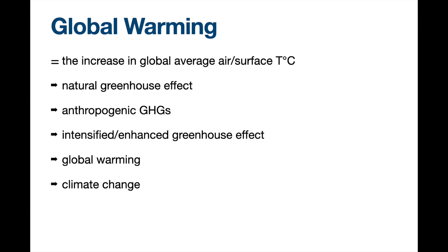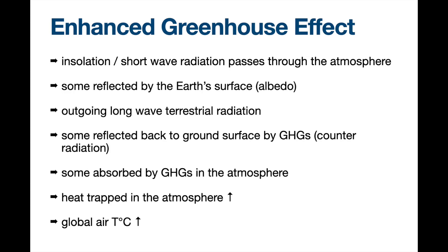As a result of more greenhouse gases, we get more heat trapped. We usually refer to this as outgoing long-wave radiation. When we talk about the sun, we have short-wave radiation coming to the earth, but when the short-wave radiation bounces off the ground surface or the earth surface.